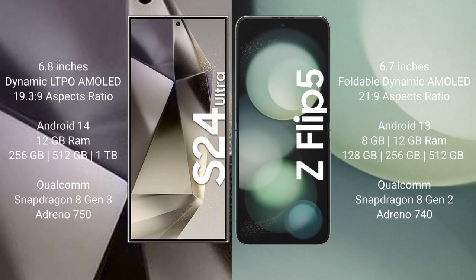Samsung Galaxy S24 Ultra comes with 12GB RAM and 256GB, 512GB, or 1TB internal storage, with a Qualcomm Snapdragon 8 Gen 3 processor and Adreno 750 GPU.